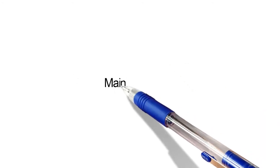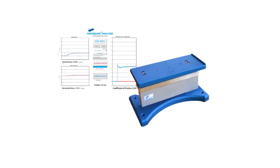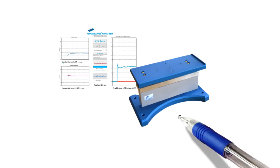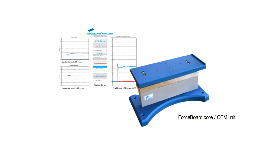The ForceBoard system consists of these main products. ForceBoard, which is the robust 2D force sensing core of the system, with included software that can be used as a standalone OEM unit or with any of the following products.